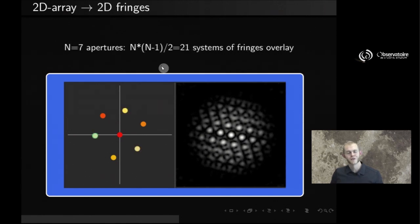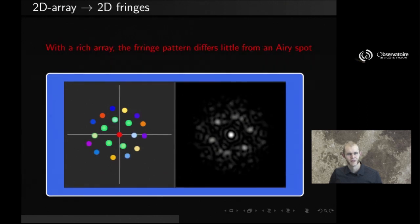Now, if you go to even more complex, richer arrays, here with 7 apertures, and you apply these arithmetics, you see that we can produce 27 systems of fringes that overlay all together, that start making a structure that, although still somewhat periodic, differs significantly from the fringes we originally had. And if you go banana and just keep adding apertures, you end up with a very rich array. And we'll observe that the fringe pattern that this array produces now differs very little from the airy spot that a telescope of equivalent size with a continuous aperture would produce, an airy function with a characteristic size that would be no different than the central peak you see at the center of this interferogram.